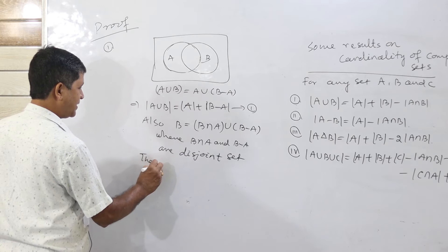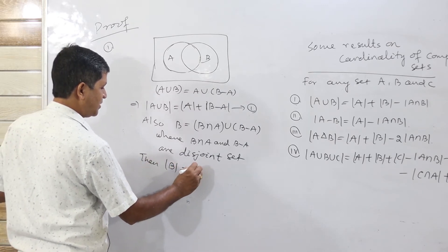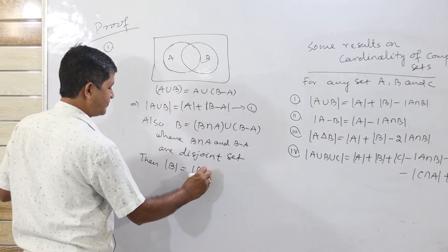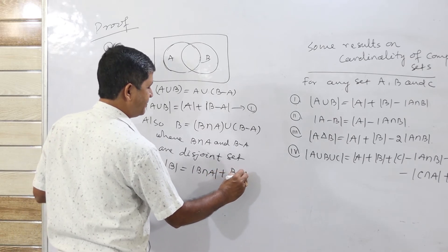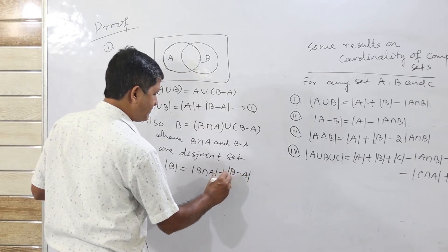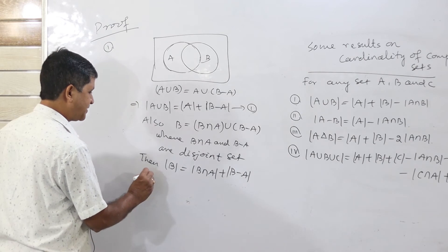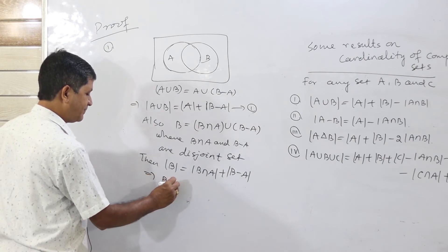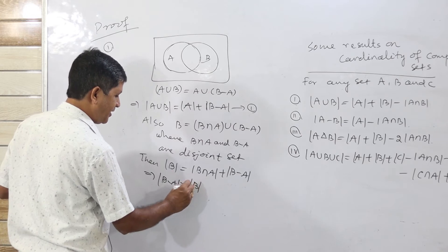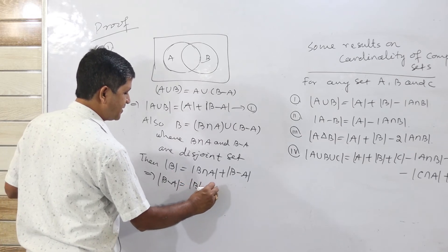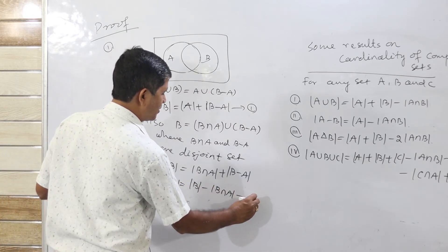Therefore, cardinality of B equals cardinality of B intersection A plus cardinality of B difference A. Rearranging, cardinality of B difference A equals cardinality of B minus cardinality of B intersection A — this is equation 2.